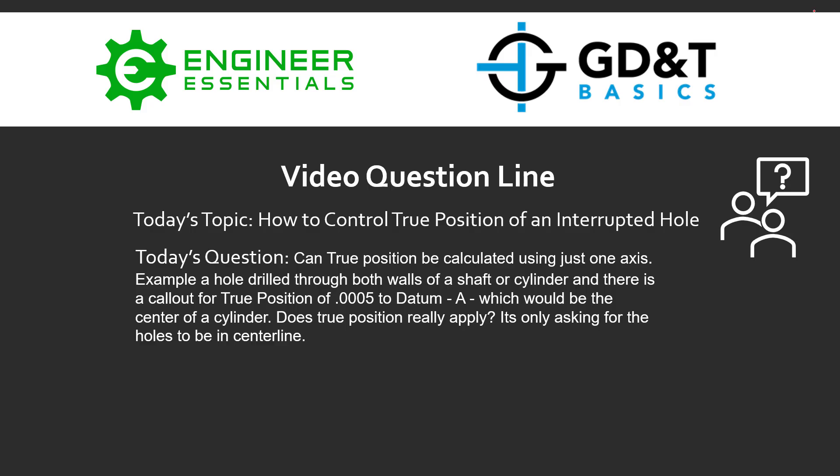Hey everybody, Jason here again with GD&T Basics and the video question line. Today's topic is how to control true position of an interrupted hole. The question submitted is: can true position be calculated using just one axis — for example, a hole drilled through both walls of a shaft or cylinder, with a callout for true position of 0.5 thou to datum A, the center of the cylinder? Does true position really apply when it's only asking for the holes to be on the centerline?